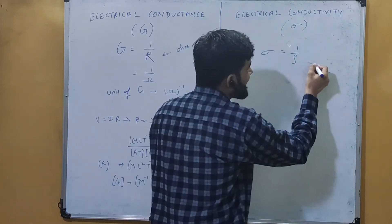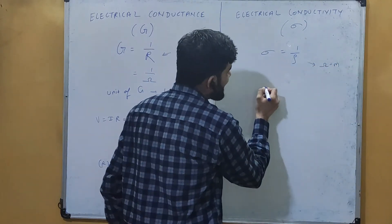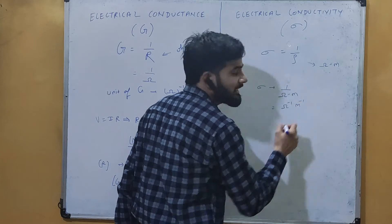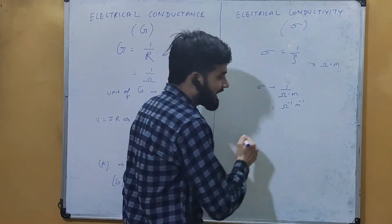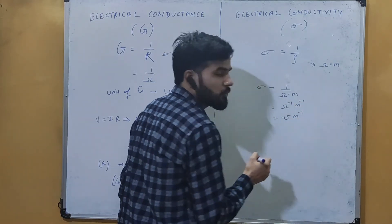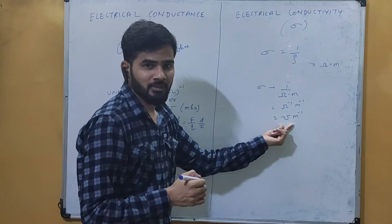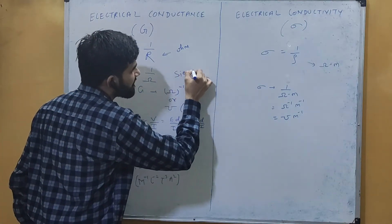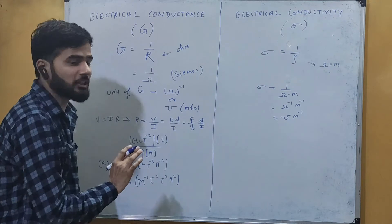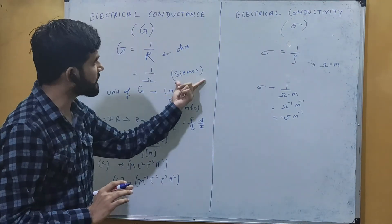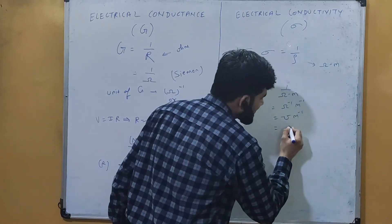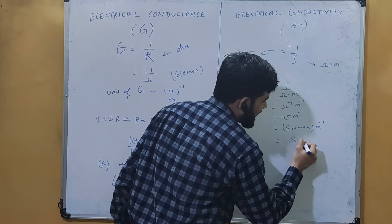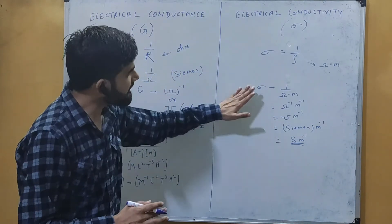The unit of resistivity is ohm·meter, so the unit of conductivity is 1/(ohm·meter), which is ohm⁻¹·m⁻¹. We can write ohm inverse as mho, so the unit becomes mho·m⁻¹. Another unit for ohm inverse (mho) is siemens, so conductivity can also be written as siemens·m⁻¹ or S·m⁻¹.